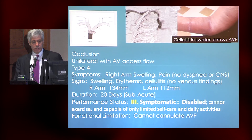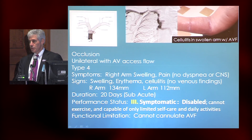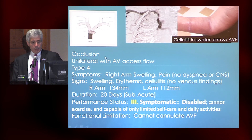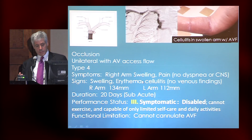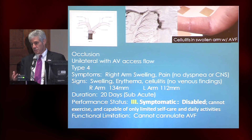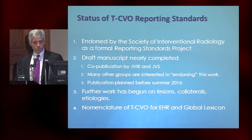Here's another case: a patient with cellulitis and a swollen arm after a fistula was placed, on antibiotics for a while. They have an occlusion, unilateral with AV access flow, type 4 obstruction with the lower portion of the superior vena cava completely occluded. Right arm swelling with pain, swelling, erythema, and cellulitis — with measurements, duration, and performance status — just an example of how this would be reported going forward based on the Central Vein Work Group recommendations for reporting standards.